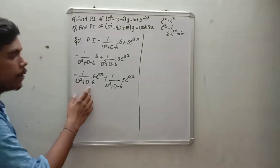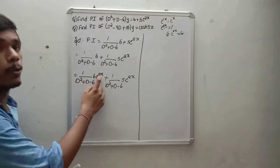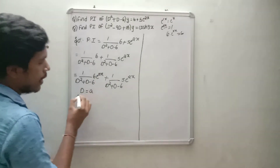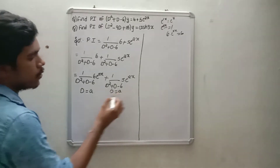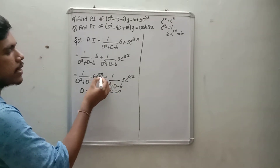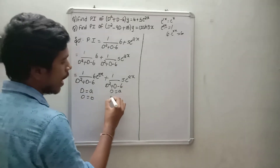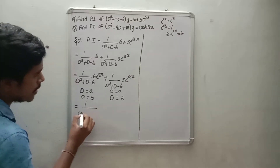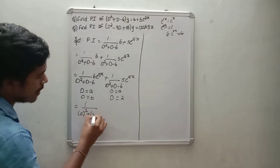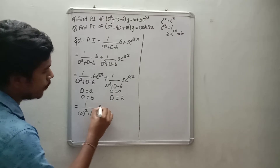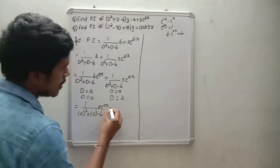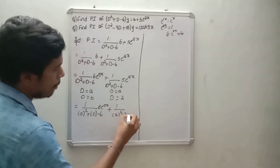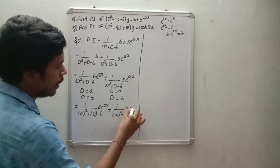For e to the power ax, substitute D equals a. For the first term, a equals 0: 1 divided by (0 squared plus 0 minus 6) into 6 times e to the power 0x. For the second term, a equals 2: 1 by (2 squared plus 2 minus 6) into 5 times e to the power 2x.